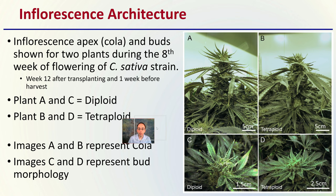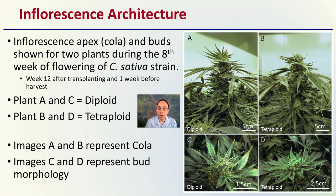Now the inflorescence architecture: looking at the specific colas and flowers, the inflorescence apex, top cola, and buds shown for two plants during the eighth week of flowering of a cannabis sativa strain — week 12 after transplanting and one week before harvest. A and C are diploid; B and D are tetraploid. Images A and B represent the cola, and C and D represent bud morphology for a closer look. We're not seeing stark differences, but if you look carefully you can definitely see some morphological differences in the inflorescence architecture.